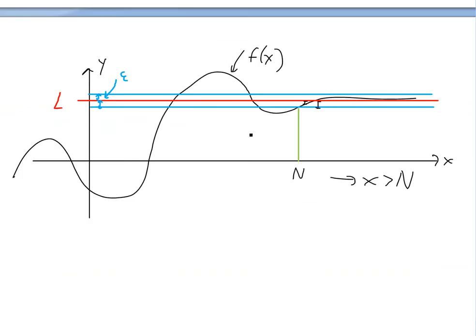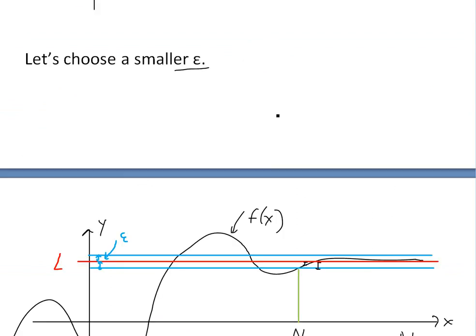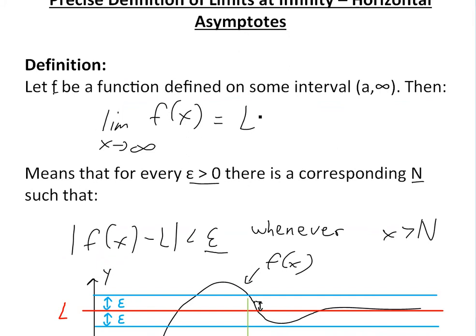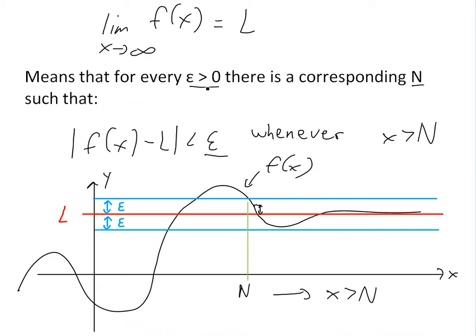Basically, if we made epsilon even smaller, all it does is bring the function closer and closer to the limit — assuming the function is going down toward L like that. So if you get smaller and smaller epsilon, you get a bigger and bigger N, and the function approaches the limit. That is the precise definition of a limit at infinity.